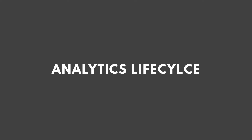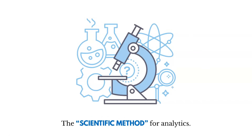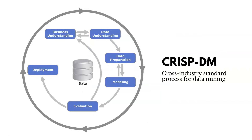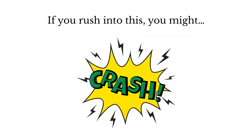Now let's talk about the analytics lifecycle. Think about this as like the scientific method for analytics — it's a tried-and-true way of doing things. The most common lifecycle is called CRISP-DM, the Cross-Industry Standard Process for Data Mining. There are really five pieces: business understanding, data understanding, data preparation, modeling, and then evaluating and deploying your model. The reason we use this lifecycle is that if you rush into analytics, you might crash and burn — you don't want to spend money on analytics without a clear business goal to achieve.